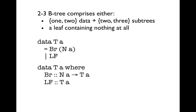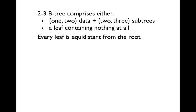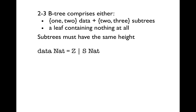In the GADT we're allowed to specialise the type variables in the constructor result types. We can use this to encode the second rule, which we rephrase to say that sub-trees of an internal node must all have the same height. Now we need to measure the heights of trees, and we'll do this using the standard unary definition of natural numbers, which says that a natural number is either zero or the successor of some other natural number. We're interested in using Z and S as type constructors, and for that we'll use GHC's DataKinds extension. An important property is that Z and S are distinct for any P, and S P and S Q are distinct types if and only if P and Q are distinct types.